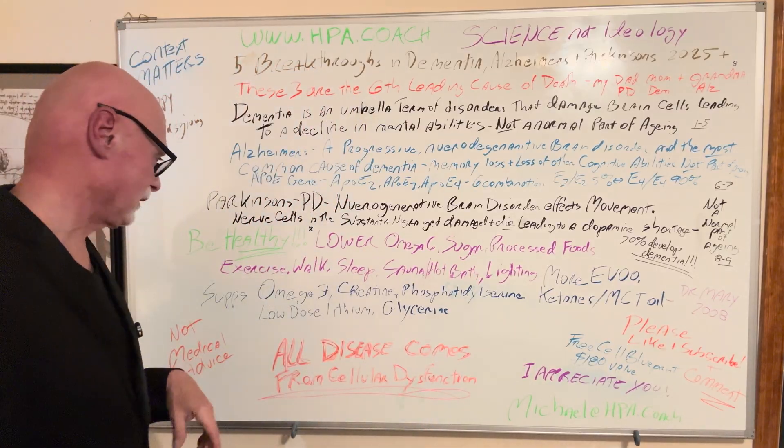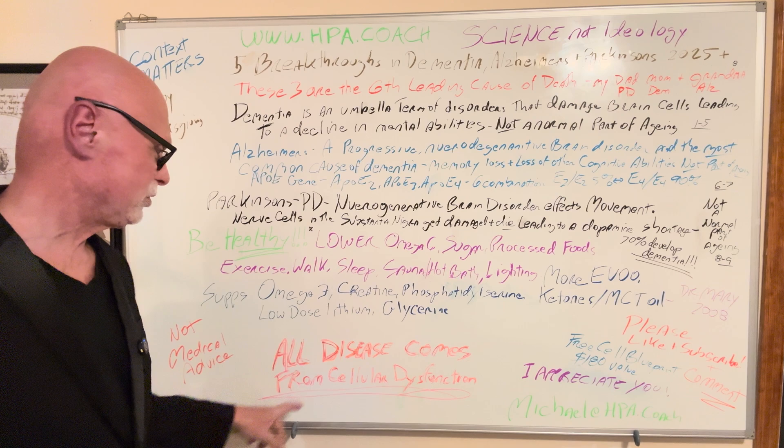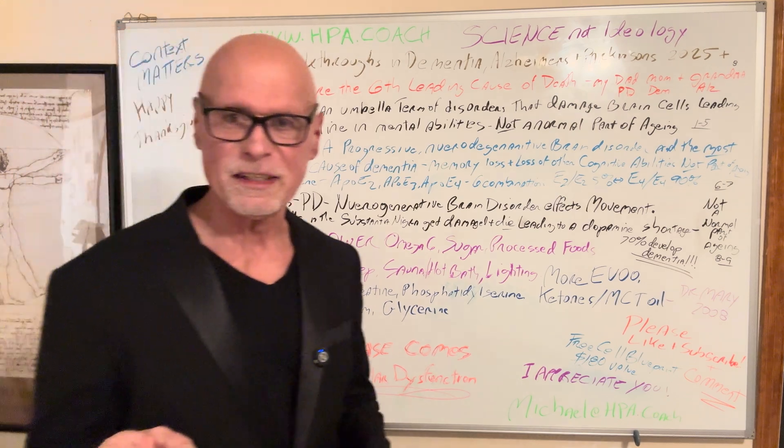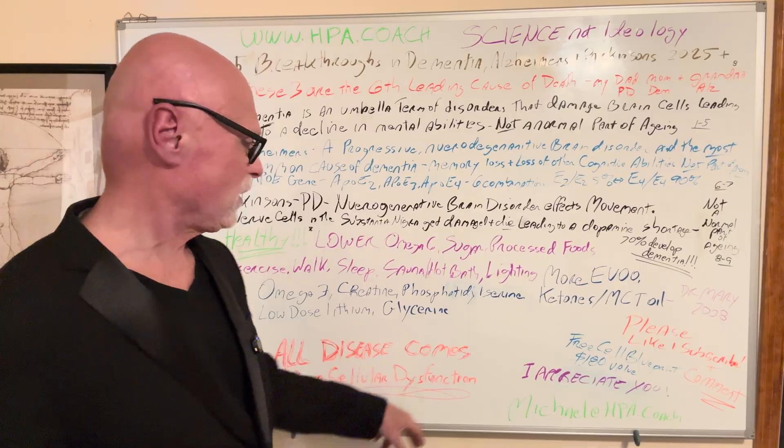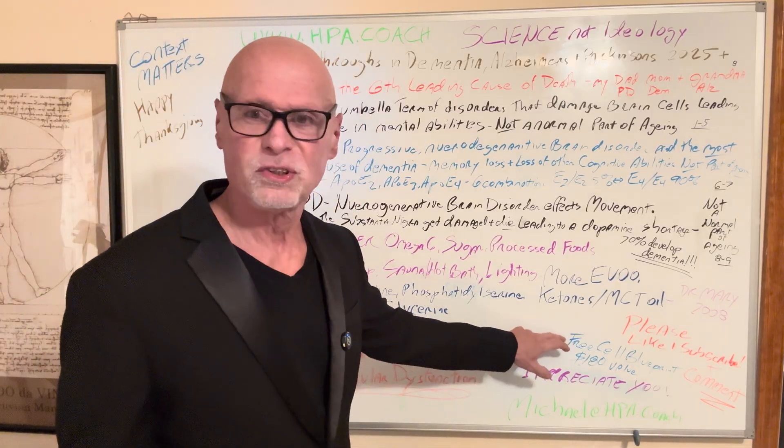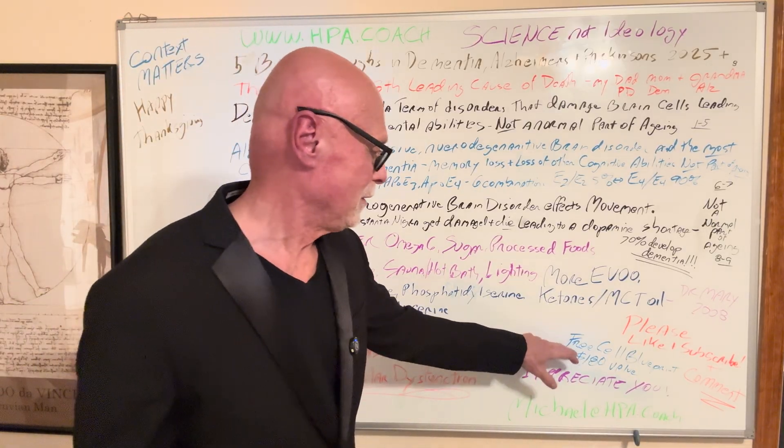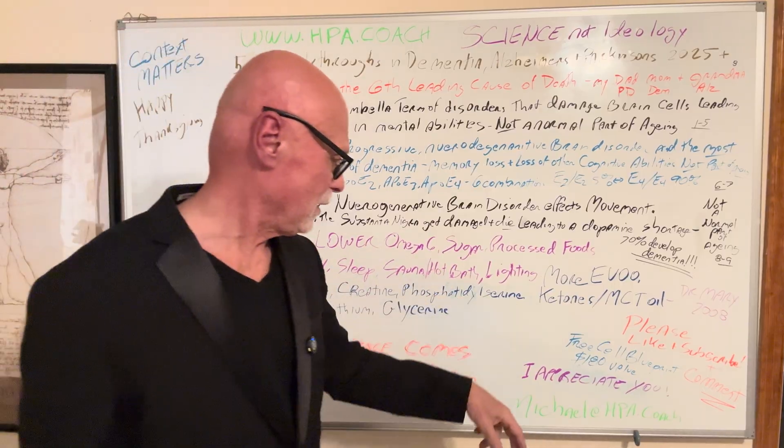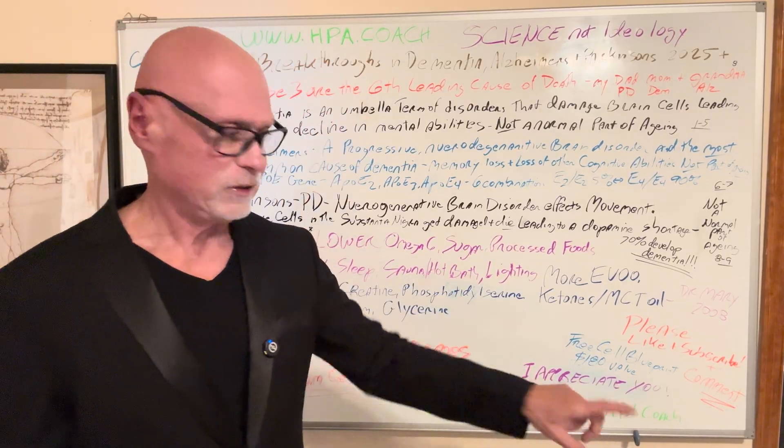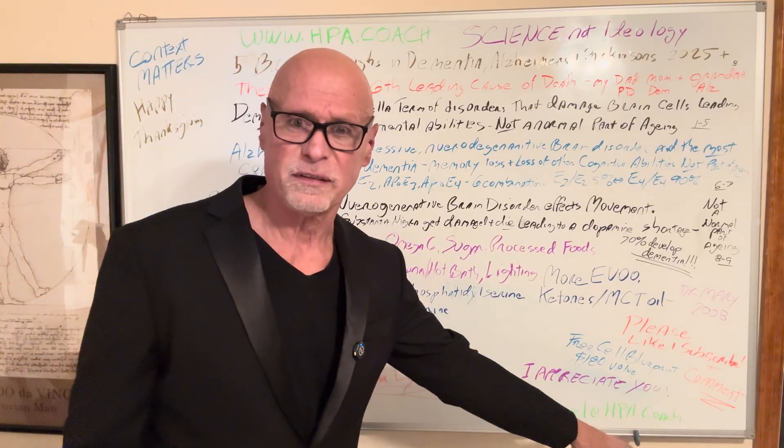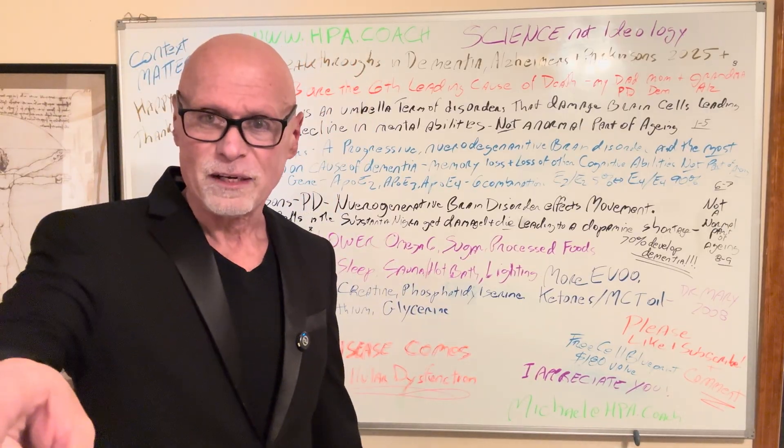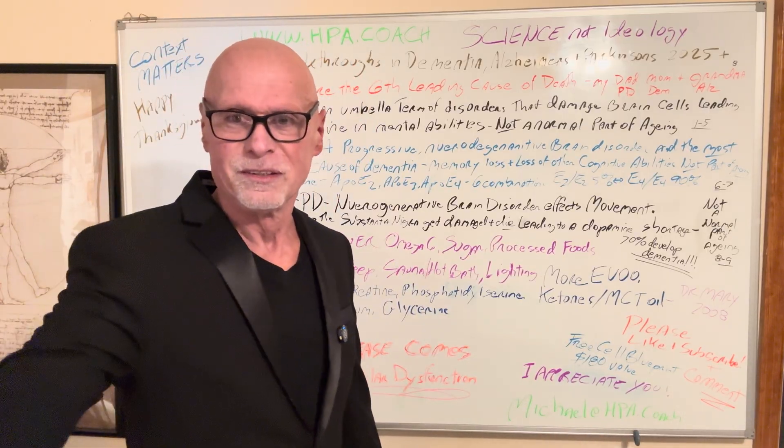All right. Have a happy Thanksgiving. All disease comes from cellular dysfunction. For Thanksgiving, free cell blueprint. Because all disease comes from cellular dysfunction. It shows up in the free cell blueprint. For Thanksgiving I'm giving that away. I appreciate all of you. To get that, reach out. Go to my website or email directly. Have a great holiday for those who celebrate Thanksgiving. See you next week.